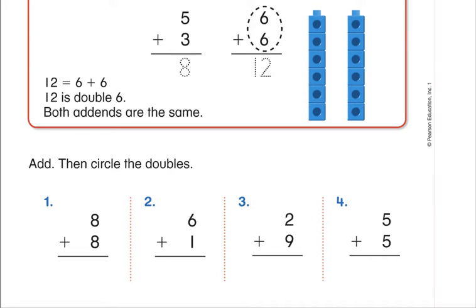Make sure you're on the right page. You should see two blue towers that make a doubles fact, and you should see four addition number sentences underneath it. I'll give you a quick second to make sure you're on the correct page. Let's read the instructions together: it says 'Add, then circle the doubles only — the doubles.'